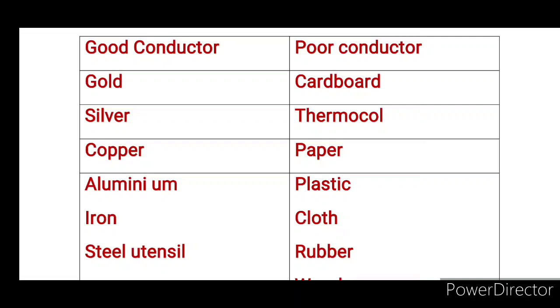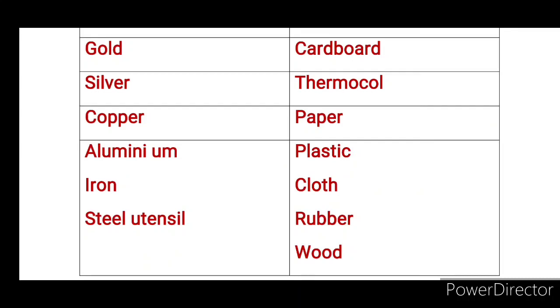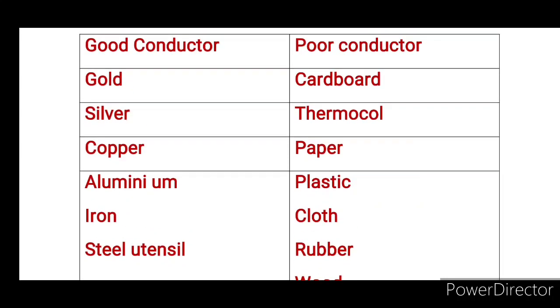Cardboard, thermal coal, paper, plastic, cloth, rubber, and wood — these are good insulators (poor conductors).